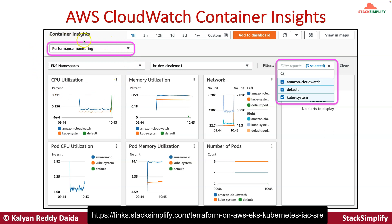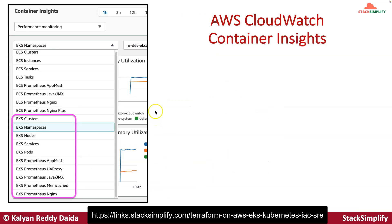Container Insights collects performance data at every stack of your EKS cluster — that is performance monitoring. For EKS namespaces, you get CPU utilization, memory utilization, network utilization, pod CPU utilization, pod memory utilization, and number of pods. In the Amazon CloudWatch namespace you can see four pods, and in the kube-system namespace (shown in orange) there are six pods. You can get information at the EKS cluster, nodes, namespaces, services, and pods levels. If you also enable Prometheus-related things, those will also be visible in CloudWatch Container Insights.